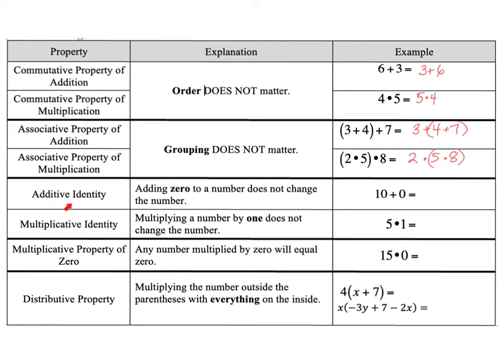So the additive identity is 0. That means when we take 0 and add it to a number, the number gets to stay who it is. It does not change the number. So the number keeps its identity.